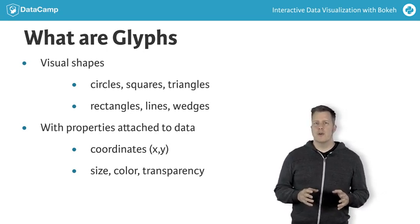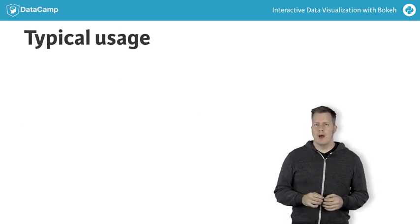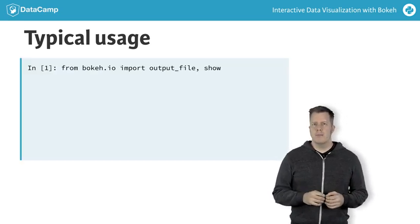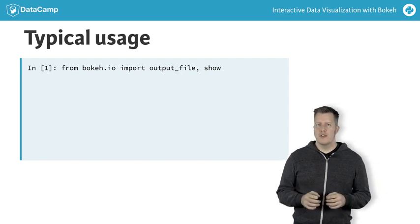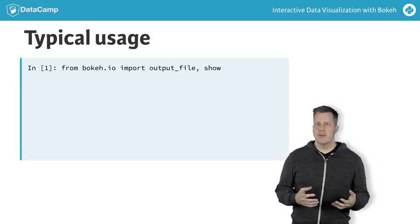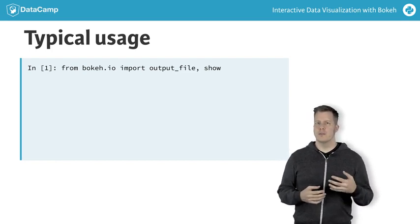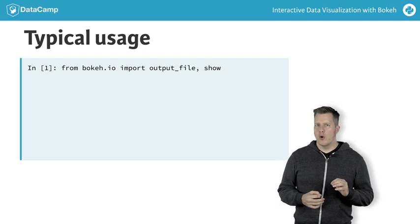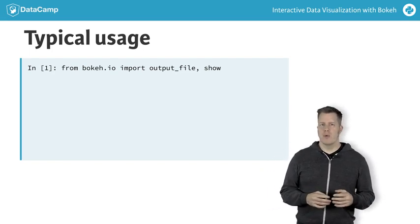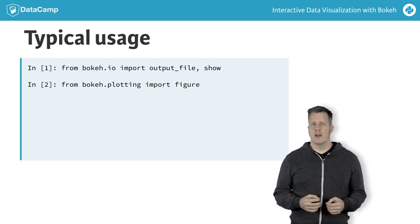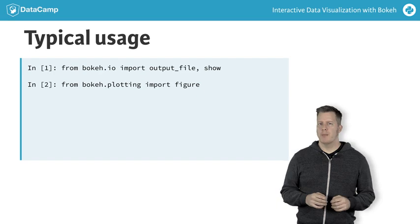Let's see what this looks like in typical usage. In order to use Bokeh.plotting and also to see our results, there are some standard Python imports. Here we see from bokeh.io, import output_file and show. These two functions make it easy to save the plots we make in an HTML file and open up a browser to display that file. It's also worth mentioning that we could instead import output_notebook in order to display plots inline in a Jupyter notebook, although we will not be using Jupyter notebooks in this course. We also see from bokeh.plotting, import figure. The figure function is what creates the basic empty plot with sensible defaults, and it's all that's required to get started using the Bokeh.plotting interface.